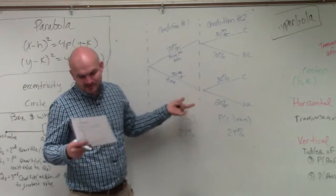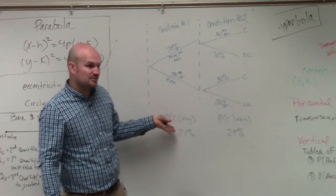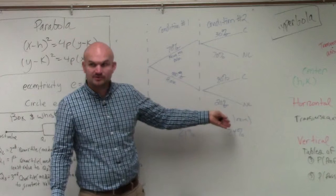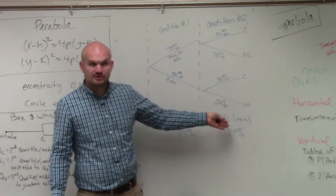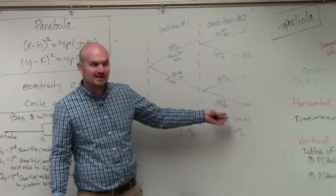So they're asking, what is the probability that the game will be canceled? So here's the probability that it's canceled with fog. Here's the probability that it's canceled with rain. So what should we do with those two probabilities to find the probability of it being canceled?